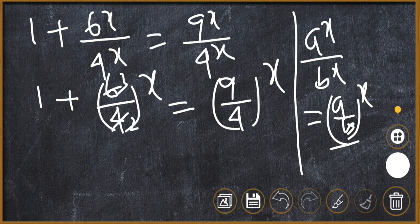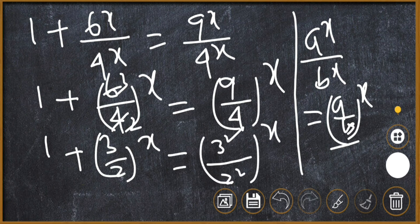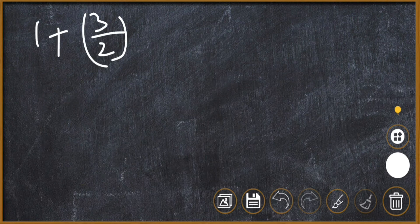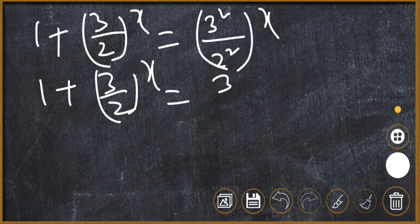So (6/4)^x equals (3/2)^x. And 9/4 can be written as (3/2)^2, so (9/4)^x equals (3/2)^(2x). Our equation becomes 1 plus (3/2)^x equals (3/2)^(2x).